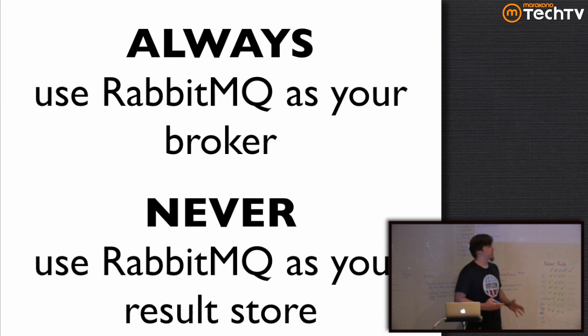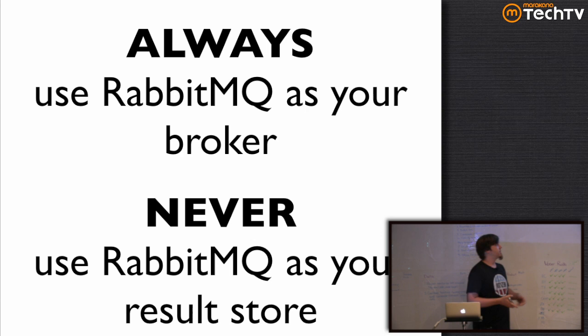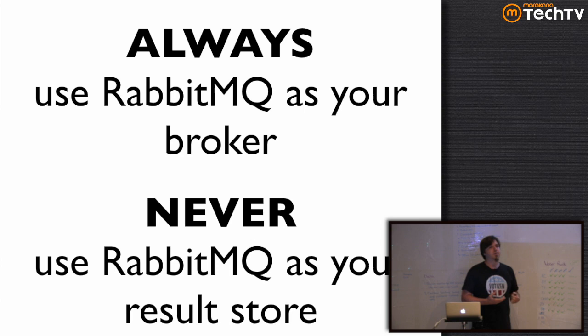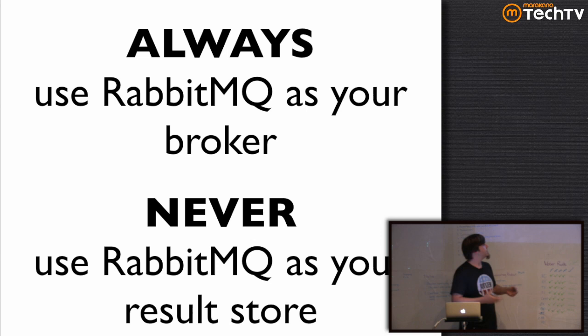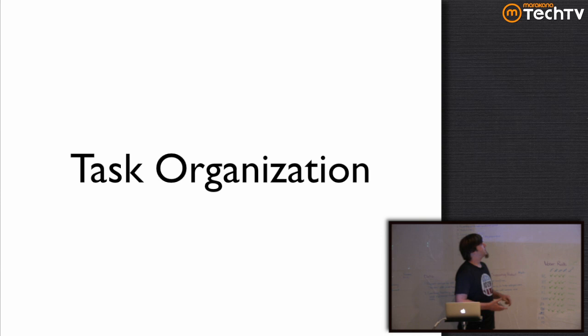RabbitMQ has ACK support. It has built-in exchanges and queue bindings and all kinds of routing features — it is meant to be used as a message queue, unlike Redis and all those other backends that Celery supports. RabbitMQ however is a terrible results store because as soon as you ask for the result once it is gone and you can never ask for it again. If you have a distributed system checking for when things are done, one place asks for it, it says yes I'm done or no not yet, you ask for it again somewhere else — and it says what task? I don't have a task. That is not what you want from a results store; it should store the result.